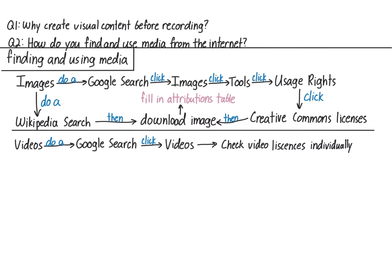Once you've found a video you like that you're permitted to use, you can either download it and just give the link to your students and hope they view it, or, if the license permits, you can embed the video right in your own video. I suggest doing this second way if possible — your students are more likely to view it. Either way, fill in the attributions table the same way you do for an image.